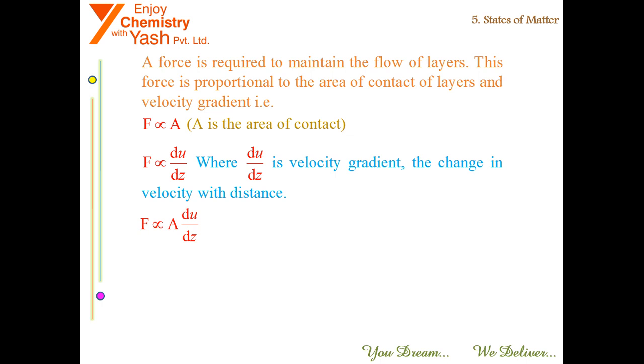So we can say F is proportional to A times du/dz. Now if we remove the proportionality term we need to introduce a constant and that constant is eta. F equals eta A du/dz.